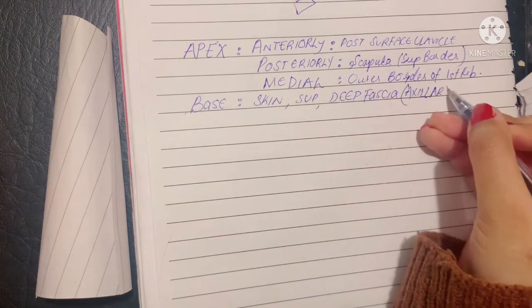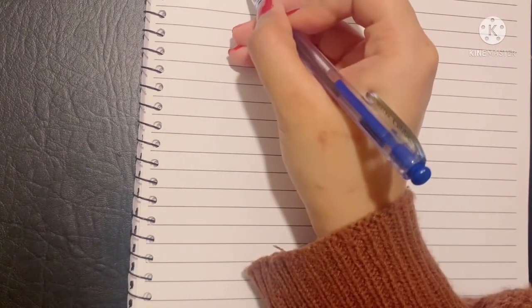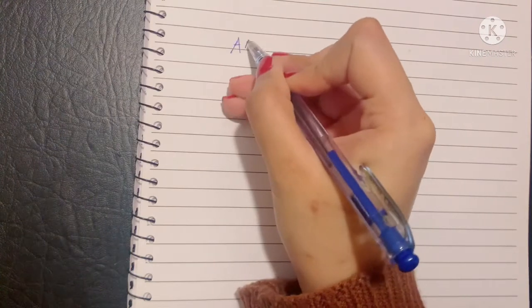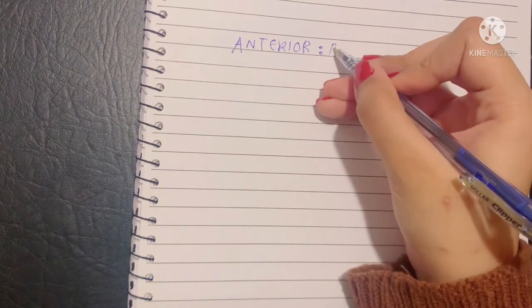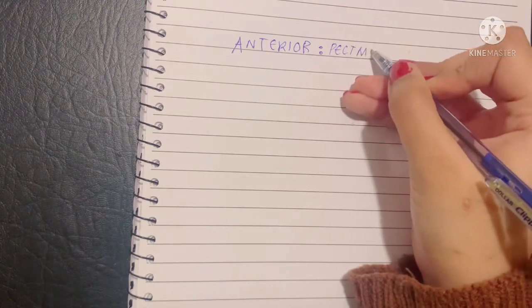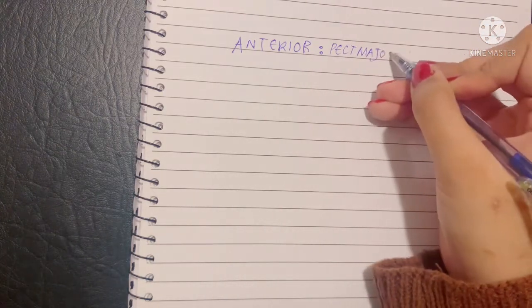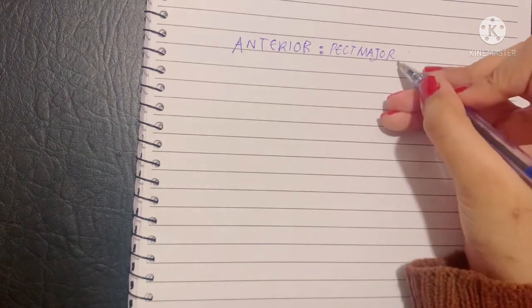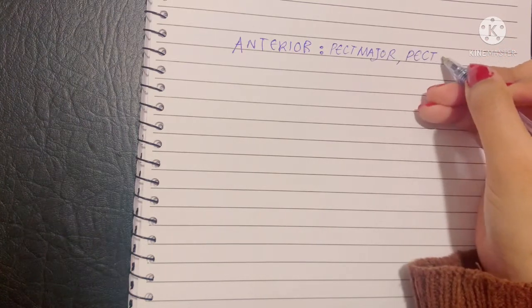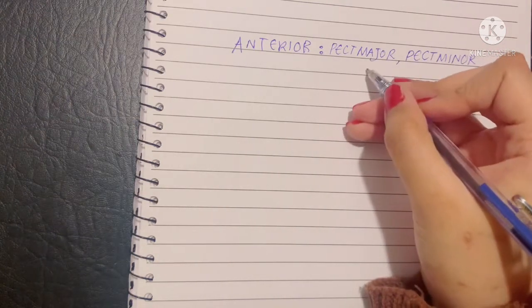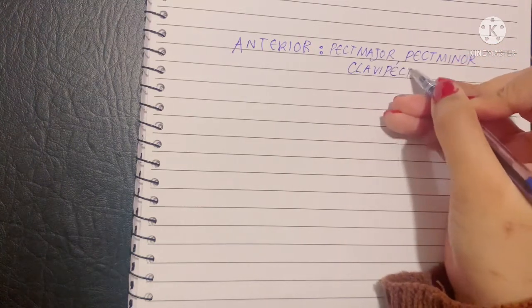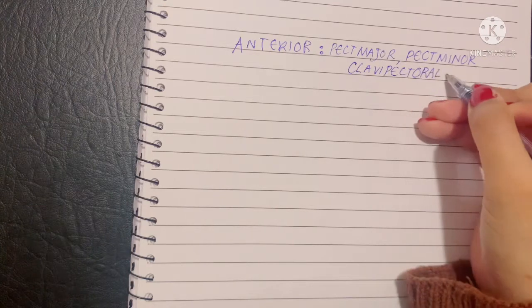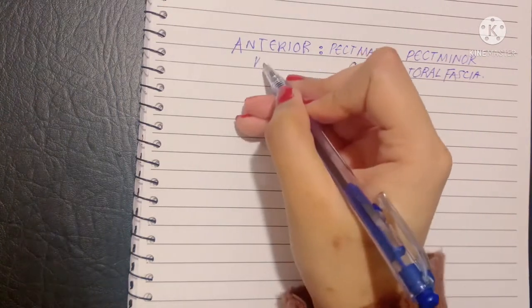Now let's talk about the walls, the four walls of the axilla. First, we have the anterior wall. Boundaries of the anterior wall are the pectoralis major muscle, because that makes up most of the anterior chest wall, and deep to that is the pectoralis minor muscle, and then the deep fascia of this area, which is also known as the clavipectoral fascia. So that is the relation of the anterior wall.